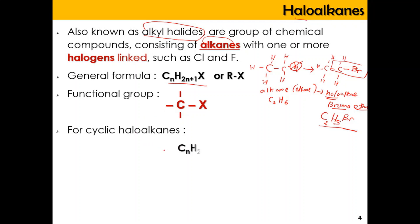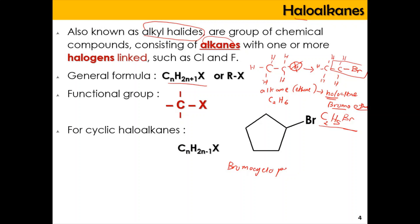Haloalkanes can also be present in cyclic molecules, where they have a formula of CₙH₂ₙ₋₁X. An example of this is bromocyclopentane, which has a five-membered ring with a bromine substituent.